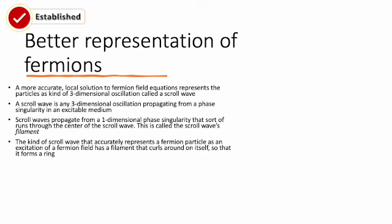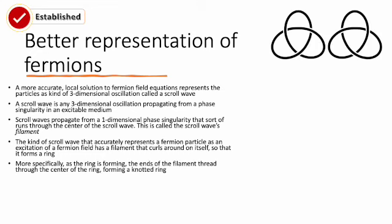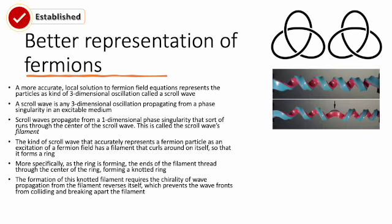The kind of scroll wave that accurately represents a fermion as an excitation of a fermion field has a filament that curls around itself. The ends of this one-dimensional line connect to one another, forming a ring. More specifically, as that ring is forming, the ends of the filament thread through the center of itself, so it forms a knotted ring. Because a knot can only exist in three dimensions, this one-dimensional filament gets embedded in three dimensions.